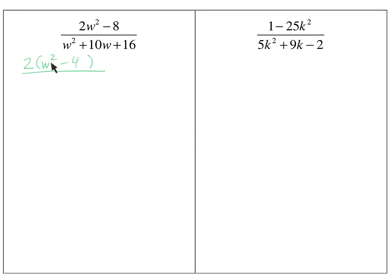The top can still factor — we'll come back to that. Let's focus on the bottom first. There is no GCF on the bottom, so it's one of those easy factoring techniques. I put the 16 on top and the 10 on the bottom, and my goal is to think of what two numbers multiply to get 16 and add to get 10. Hopefully you can tell that would be 8 and 2. So the bottom factors as (W + 8)(W + 2).